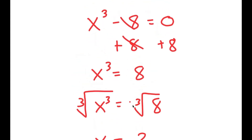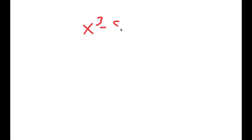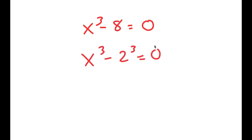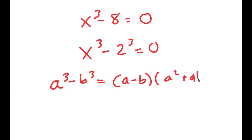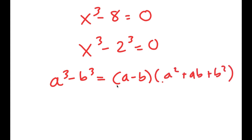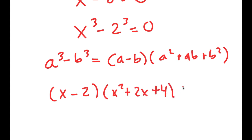But actually, there are more than one solution to this equation. So I'm going to rewrite my equation here: x to the power of 3 minus 8 equals 0. Now I'm going to rewrite 8 as 2 to the power of 3, so I get x to the power of 3 minus 2 to the power of 3 is equal to 0. Then I'm going to use the formula a³ minus b³ equals (a minus b)(a² plus ab plus b²). So this turns into (x minus 2)(x squared plus 2x plus 4) is equal to 0.